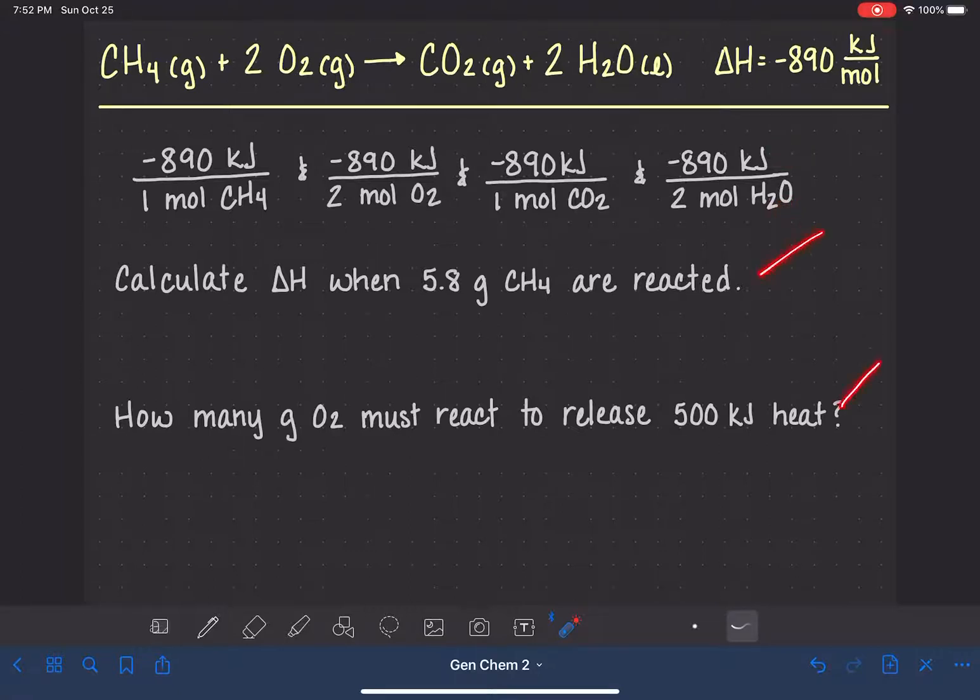Let's look at a couple of examples of how we could use these conversion factors. In this first problem we're looking at, we're being asked to calculate the delta H when we react 5.8 grams of CH4. Just like any one of these types of problems, like any type of stoichiometry problem, whenever you are starting with units of grams of any molecule, the first thing that you should always do is convert that into moles of that molecule using the molar mass of the molecule. For CH4, the molar mass is 16 grams per mole. And in this step, we are converting out the units of grams.